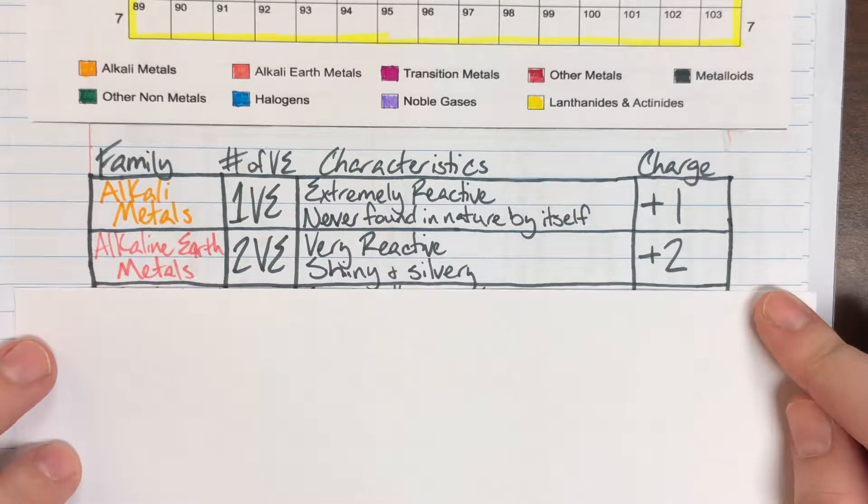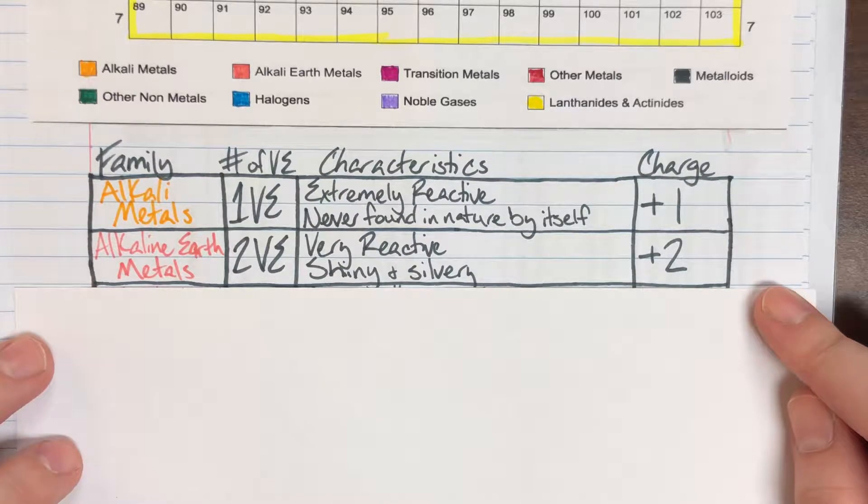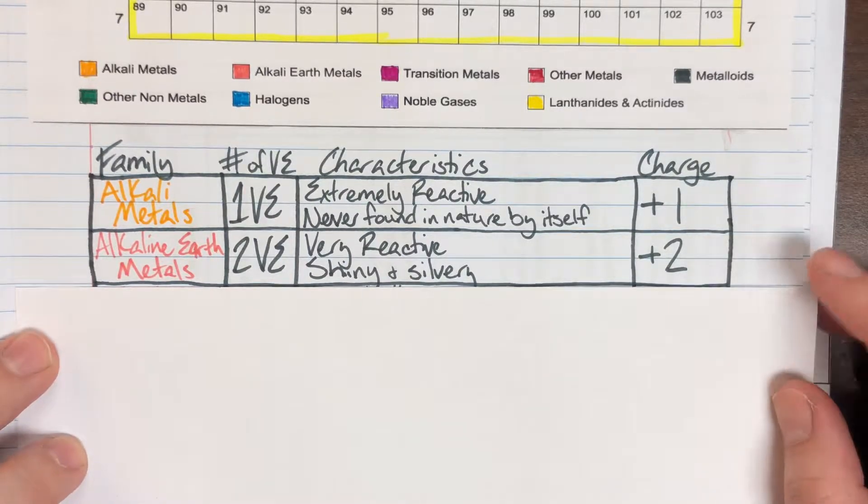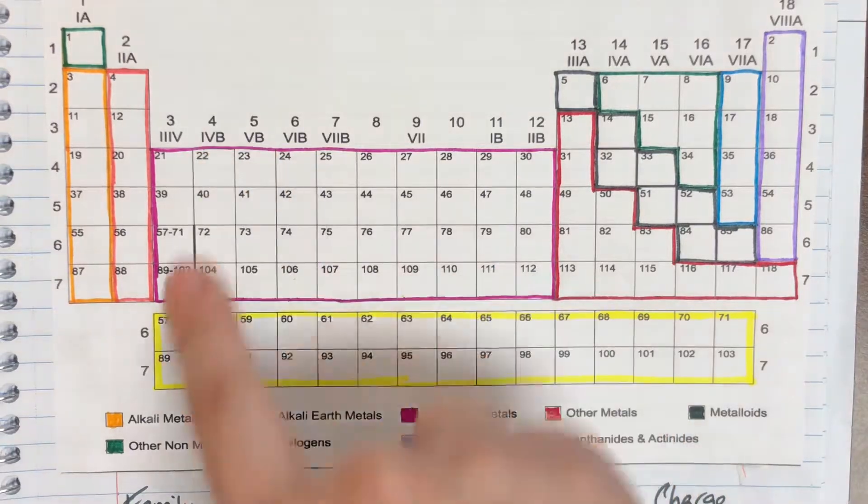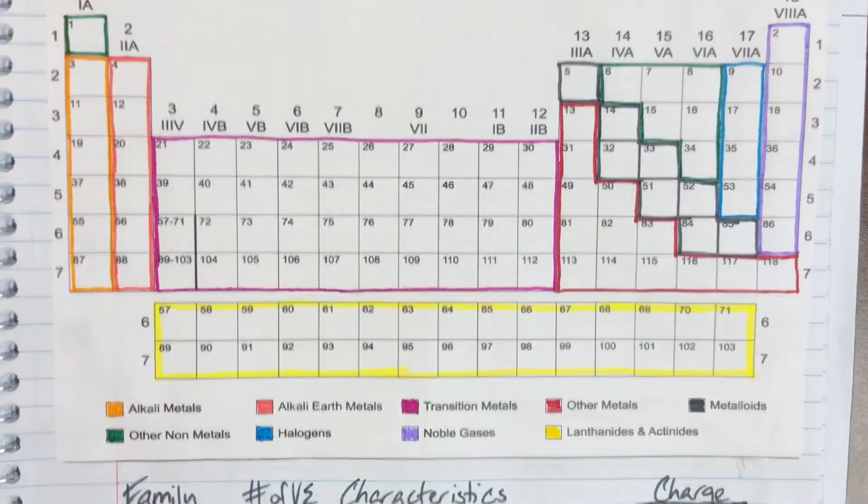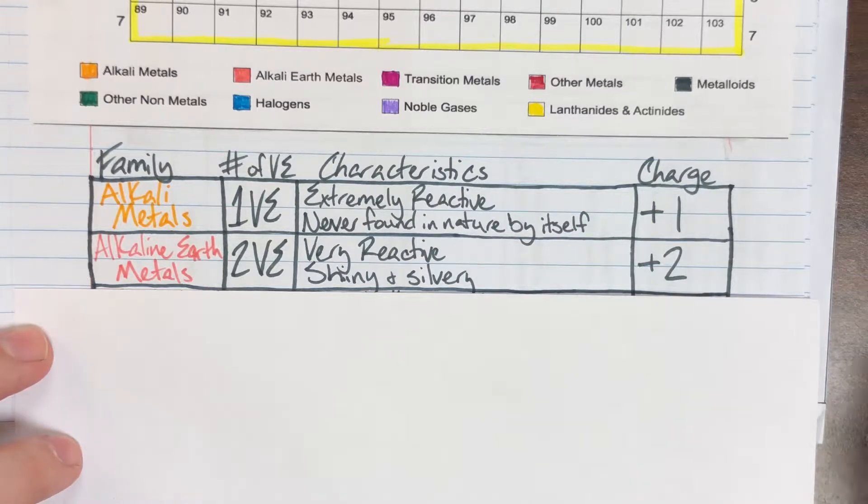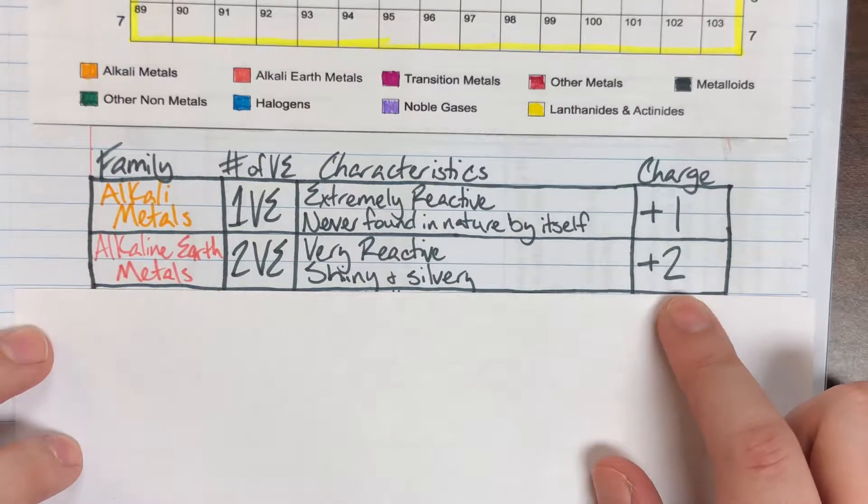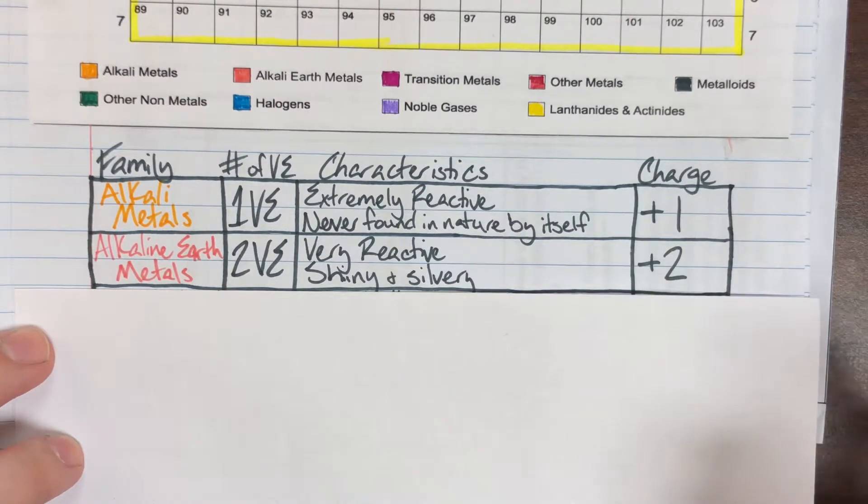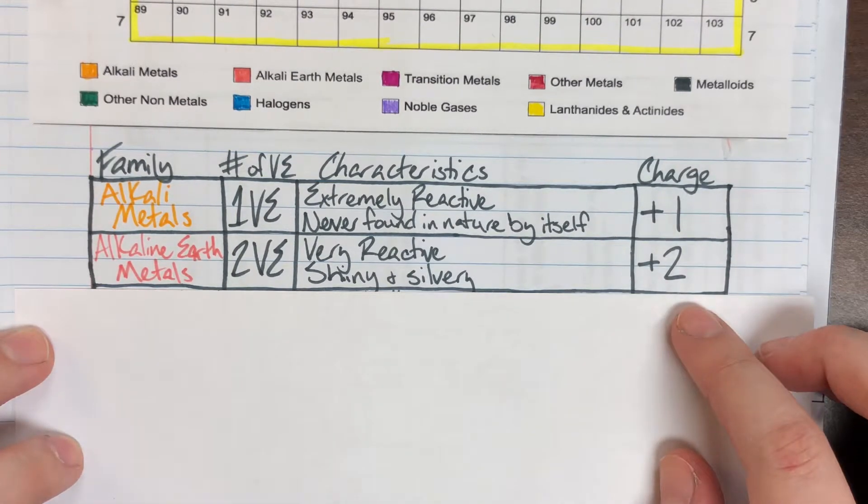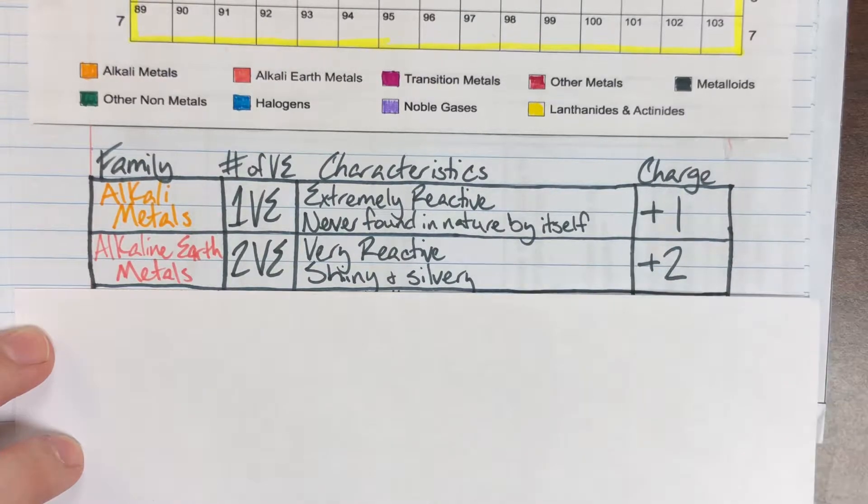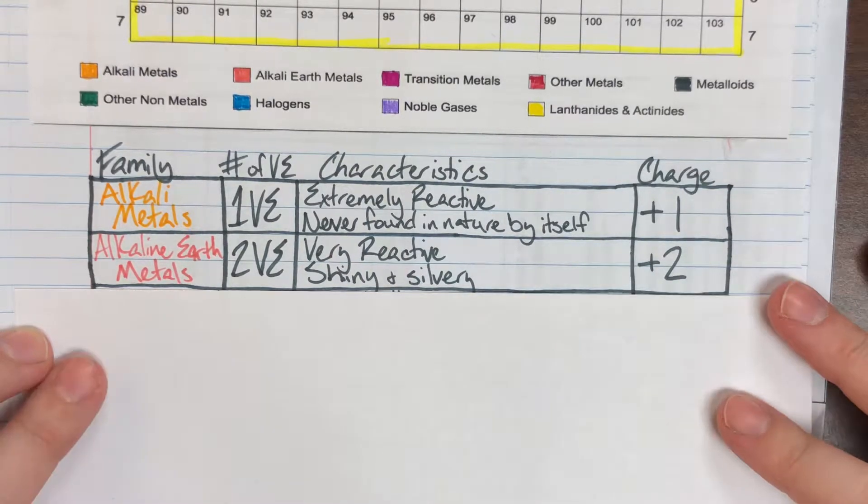Next, we have alkaline earth metals. Alkaline earth metals are in column 2, so they have two valence electrons. They are very reactive, slightly less reactive than alkali metals, and are also shiny and silvery. Two valence electrons is still too far from the optimal 8, so they have a charge of +2 after they give away two valence electrons.